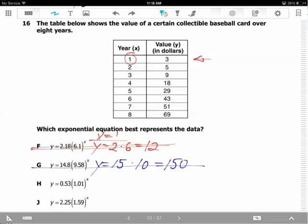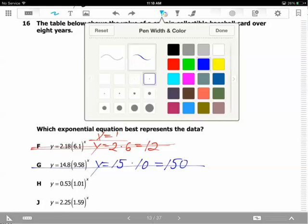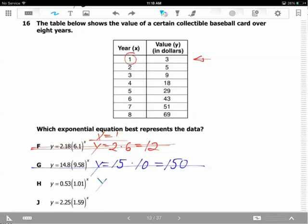For H, we have 0.53, that's about 1/2, times 1 to the power of 1, which is 1. It should be 1/2, not good because I need to have 3. H is eliminated. You have one option left.